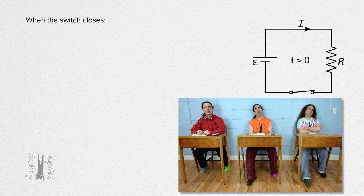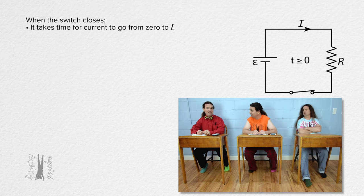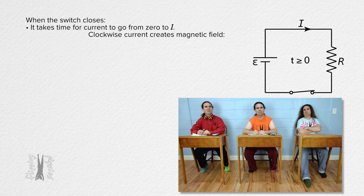When the switch closes, current flows, right? He is implying it takes time for the current to transition from zero to the current through the circuit, which makes sense. But why? We know current is moving charges and moving charges create magnetic fields, right?